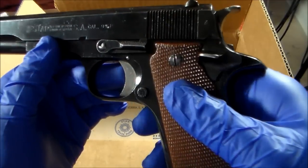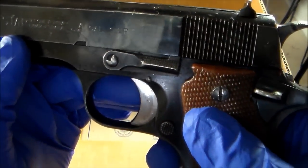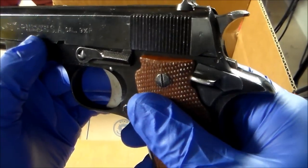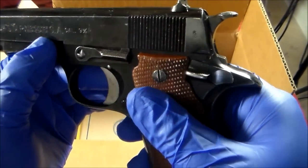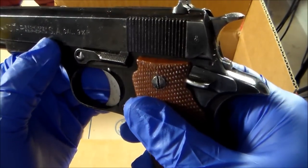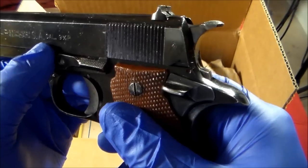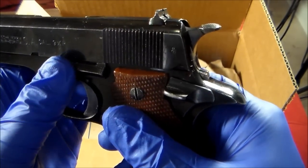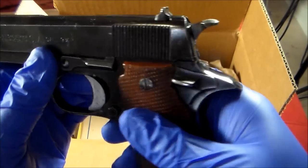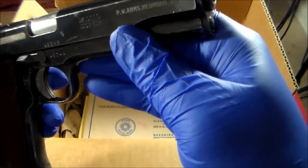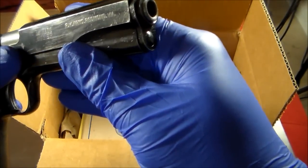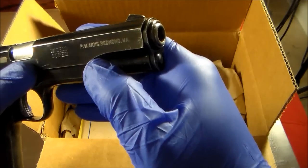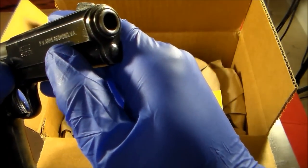So let's look at the markings. I don't know if you can see it. It says Star, Echeveria, Espana, SA, caliber 9mm, and then letter P, 9mm Parabellum. On the other side, it says Modelo Super, imported by PW Arms, Redmond, Virginia.